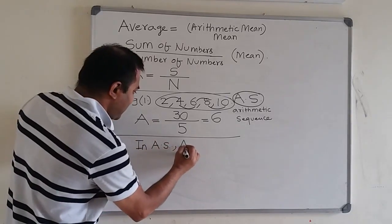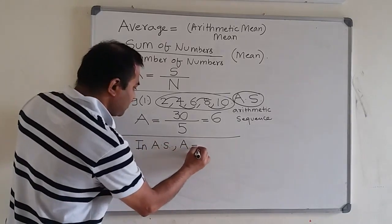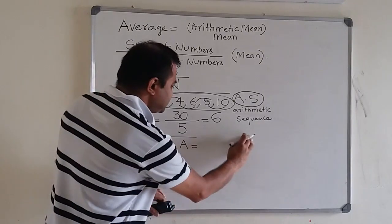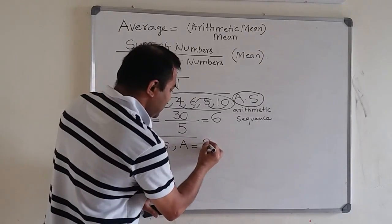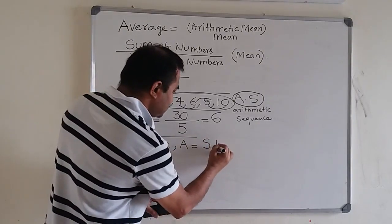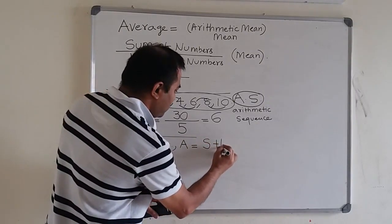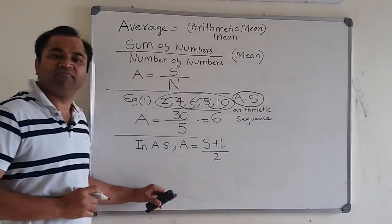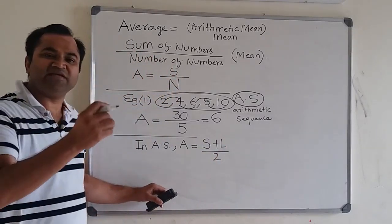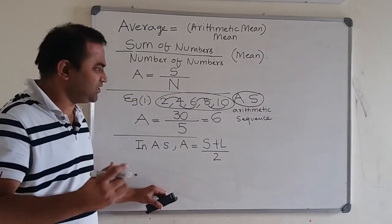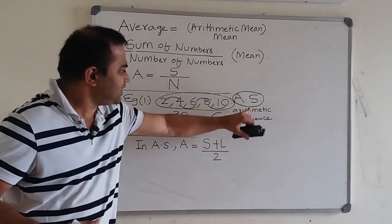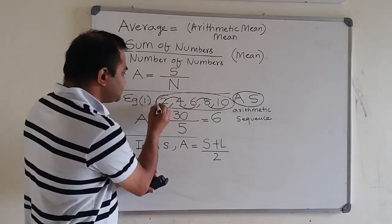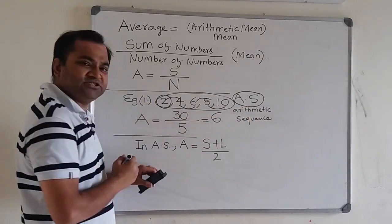If the numbers are in arithmetic sequence, then the average of all the numbers will be the same as the average of the smallest and the largest. This is a very simple formula to find average when numbers are in arithmetic sequence.